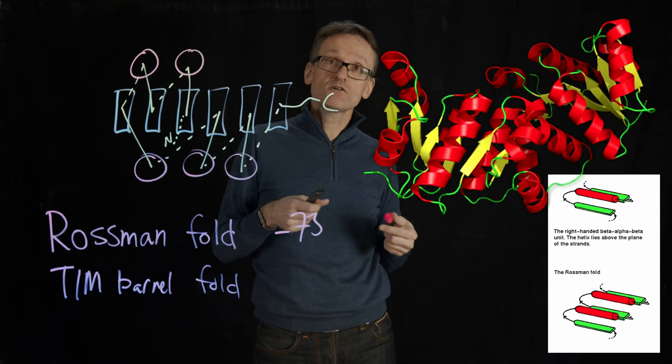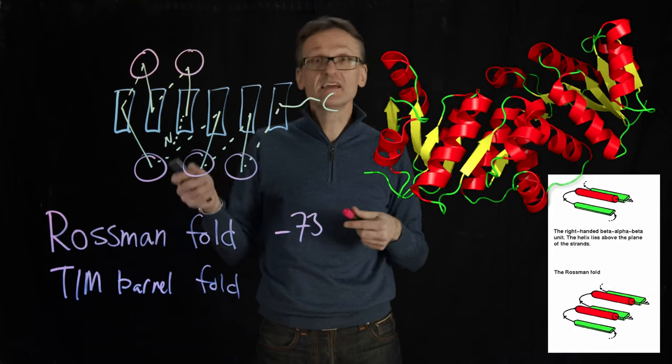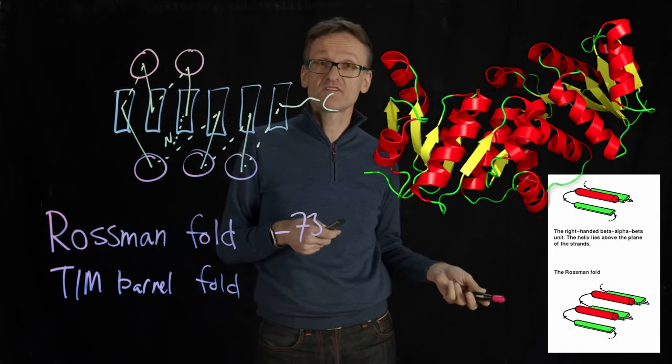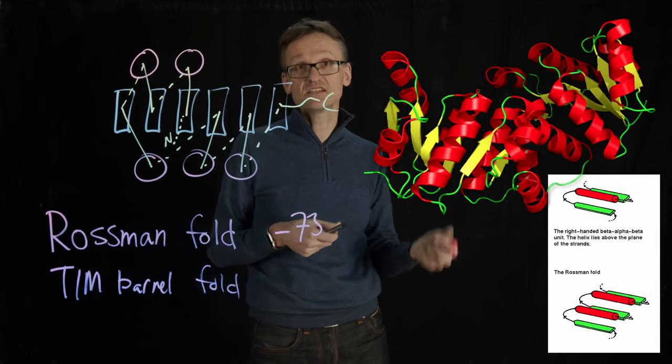But if instead of having a free loop, I can put a secondary structure element there, such as a helix, it's going to become very stable. And that's why we get this pattern of right-handed turns. So that's sheet, helix, sheet, helix, sheet, etc.